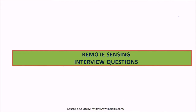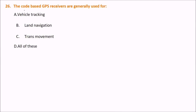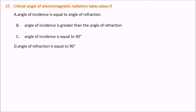Let us take a few more questions on remote sensing, GPS and GIS. The first one is: code-based GPS receivers are generally used for vehicle tracking, land navigation, and trans movement. The answer is all of the above — code-based GPS receivers are used for all three.